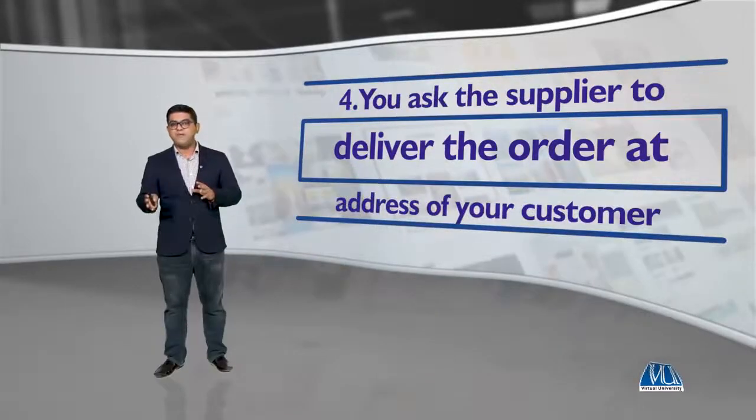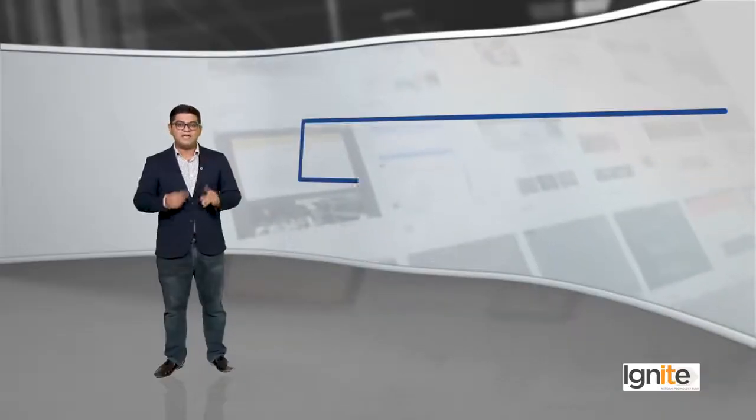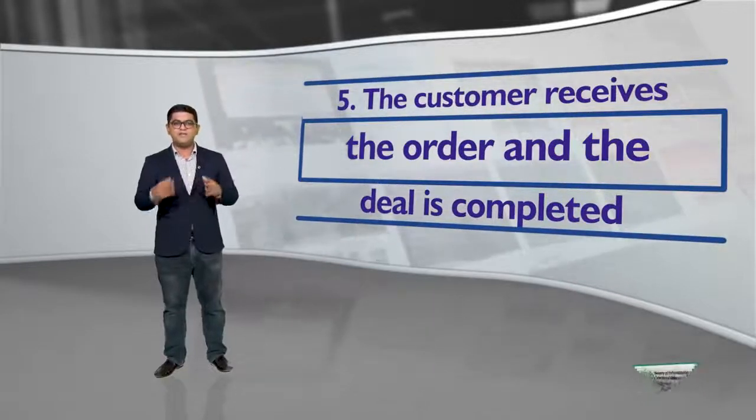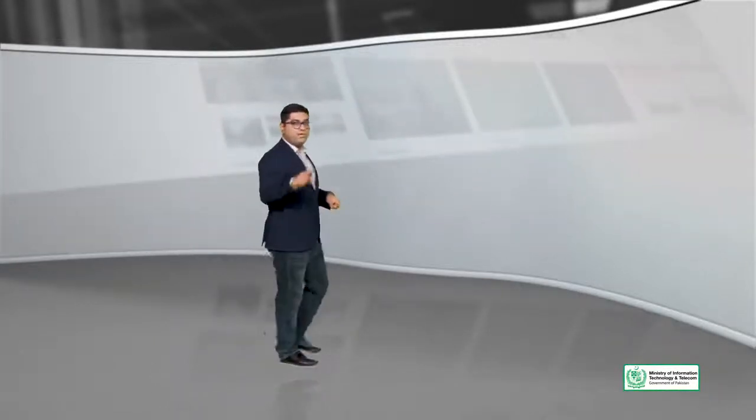Number four: you ask the supplier to deliver the order at the address of your customer. Aap supplier ko kehte hain ke yaar ye order to mera hai, lekin isko mere tak na pahunchao, isko directly is bande tak pahunchao — so automatically aapka supplier aapke customer ke ghar order pahuncha dega. Number five: the customer receives the order and the deal is completed. Is poore process mein customer ko nahi pata ke back end pe supplier koi aur tha — customer ko lagta hai ke usne cheez aap se order ki hai. And that is what makes drop shipping such an amazing option.